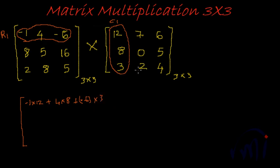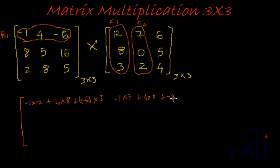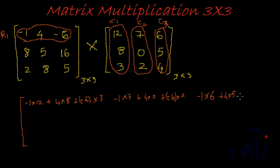Similarly, the next element in the first row is arrived at by multiplying row 1 with column 2 — the sum product of row 1 with column 2 elements. That would be minus 1 into 7, plus 4 into 0, plus minus 6 into 2. The last element of the first row is row 1 into column 3, which would be minus 1 multiplied by 6, plus 4 into 5, plus minus 6 into 4.